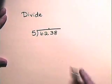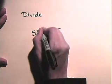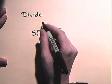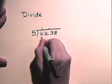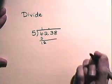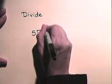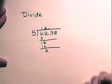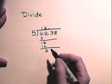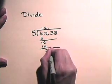5 divides into 6 once. Multiplying, 1 times 5 is 5, and we subtract, leaving us with 12. 5 divides into 12, 2 times. We multiply, 2 times 5 is 10, we subtract. We ignore the decimal, bring down the next number, which is a 3.